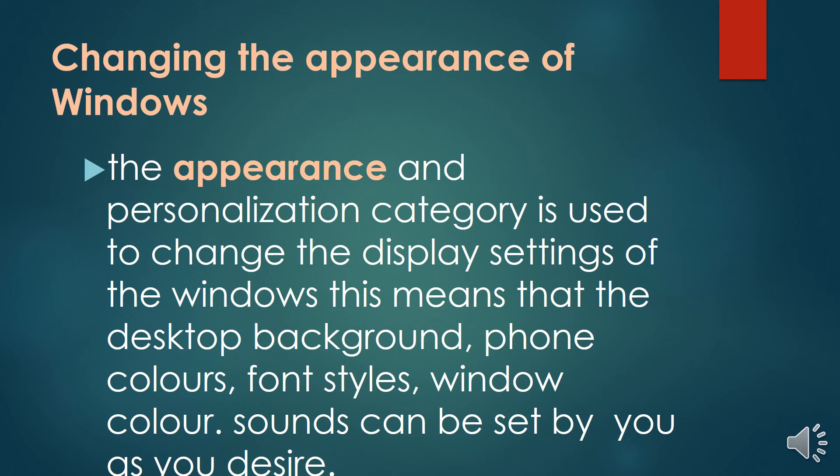Next, how to change the appearance of windows. We use the Appearance and Personalization category. The Appearance and Personalization category is used to change the display settings of Windows. This means that the desktop background, font color, font style, window color, and sound can be set by you as you desire.